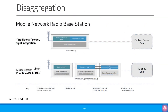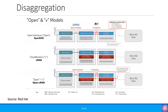Red Hat defines Open RAN to mean both the disaggregation of mobile network base stations into more standardized entities — the functional split — as well as the introduction of cloud technology to enable automated deployment and scaling to optimize the location of workloads. As shown in the diagram, you can have Open RAN with open interfaces, VRAN as cloudification of the traditional RAN, or Open VRAN as the combination of both.